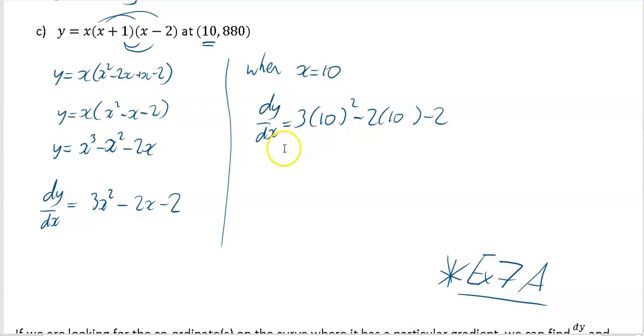So very good practice just to use your brackets all the time. Now we'll just tidy that up. That will be 3 times 100 minus 2 times 10, which is going to be 20 minus 2. 300 minus 20 is going to be 280 minus 2 is going to be 278.